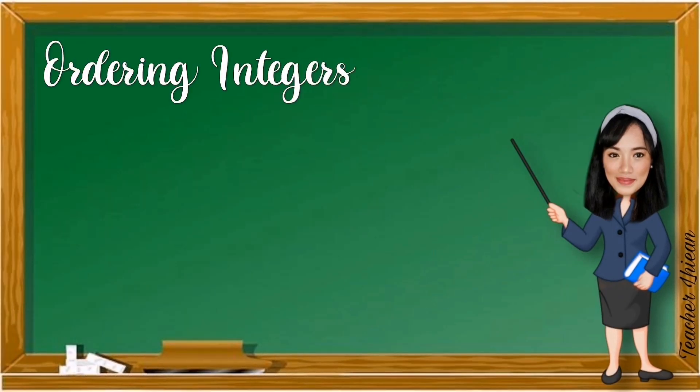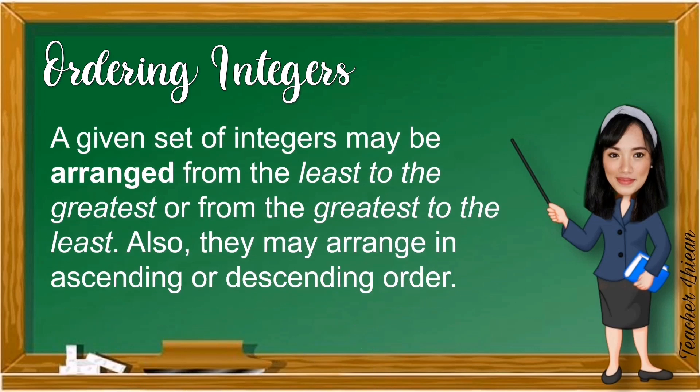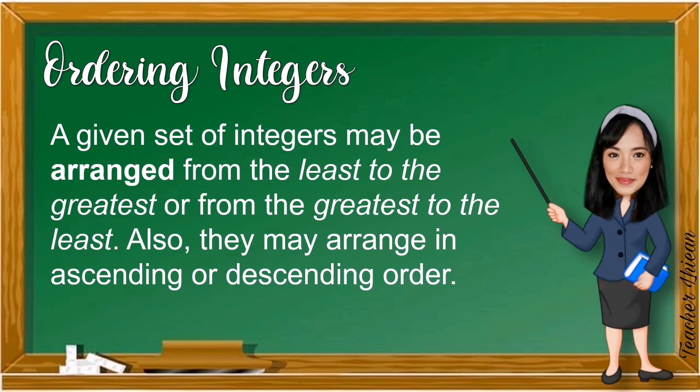Now let us look at ordering or arranging integers. A given set of integers may be arranged from the least to the greatest — that is, from the lowest value to the highest. Or from the greatest to the least — from the highest value to the lowest. These are also called ascending order (least to greatest) and descending order (greatest to least).